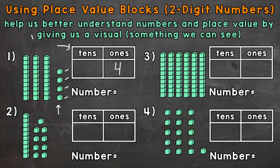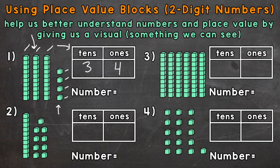Now let's look at these stacks. Those stacks of blocks represent groups of 10, because each of those stacks has 10 blocks. So we can just count the stacks — we don't need to count each individual block, because we know they're grouped into groups of 10. We have one, two, three groups of 10, which is 30. So let's put a three in the tens place to represent that. That three has a value of 30, three groups of 10. So in standard form we have 34. This four represents four ones, and the three represents three groups of 10, which has a value of 30, giving us the number 34.